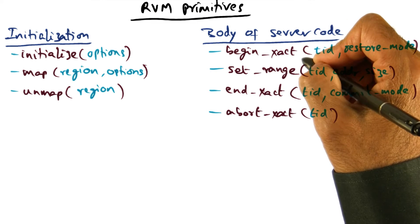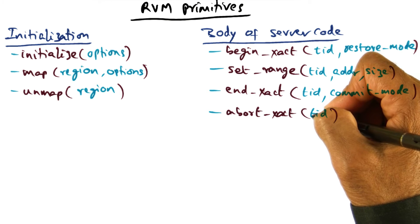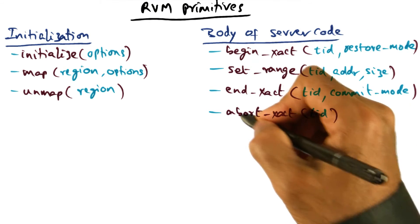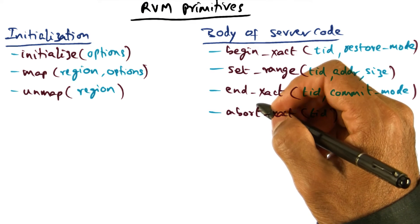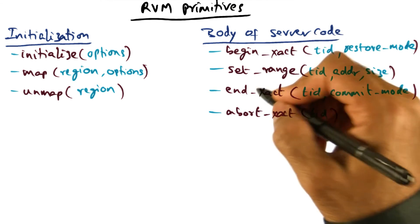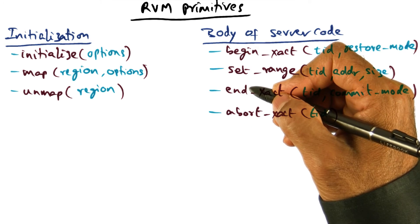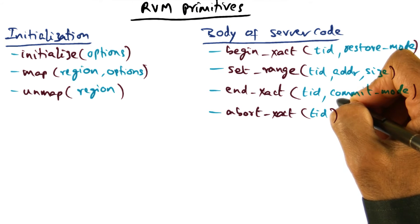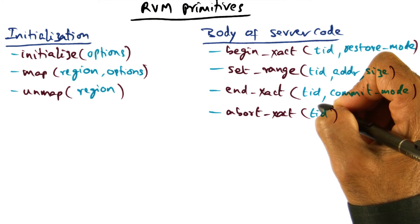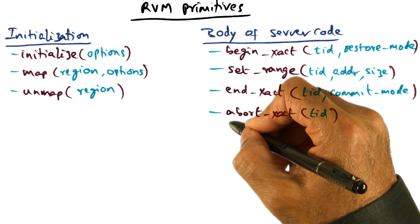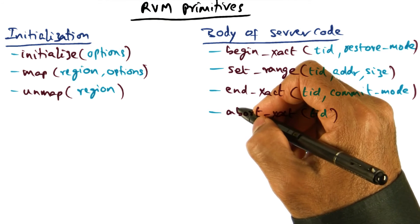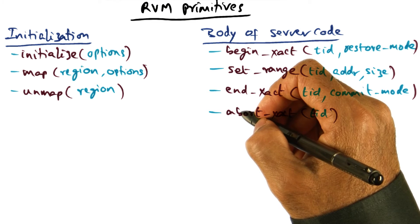On the other hand, a begin transaction could also end in an abort transaction, which signals to the RVM library that all the changes the application made between begin transaction and abort transaction should be thrown away and not committed to the disk — that is, they should not be persistent. So between begin transaction and end transaction, the application developer is modifying the in-memory version of persistent data structures and committing them to persistent storage. If the developer calls abort transaction, all changes to persistent data structures are thrown away by the RVM library and not persisted.